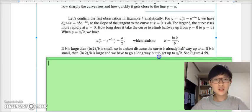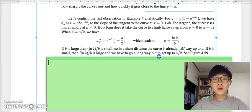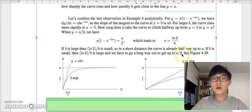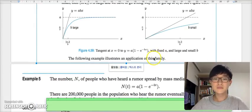If b is larger, then ln(2)/b is smaller, so in a short distance, the curve is already halfway up to a. If b is small, then ln(2)/b is large, and we have to go a long way out to get to a/2. Compare these two figures right here.